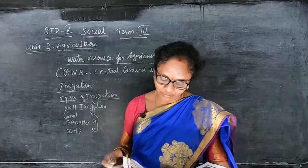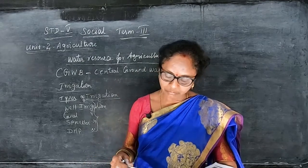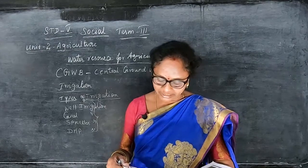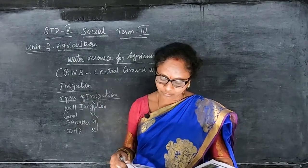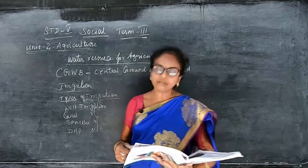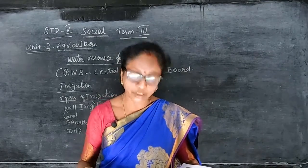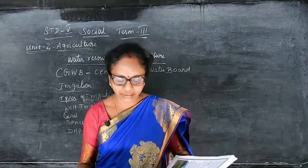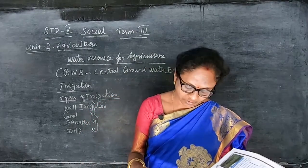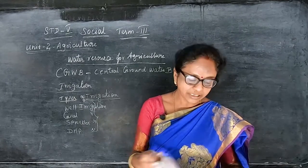The Green Revolution is a process which brought an increase in crop production by using new varieties of seeds, pesticides, and new agricultural techniques. Dr. M.S. Swaminathan of Tamil Nadu is known as the Father of the Green Revolution in India.